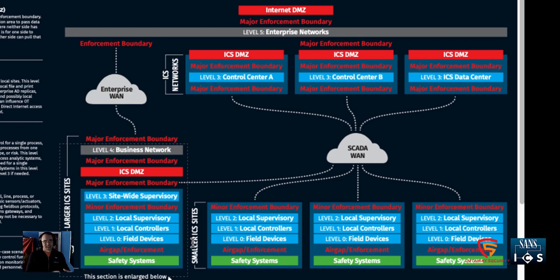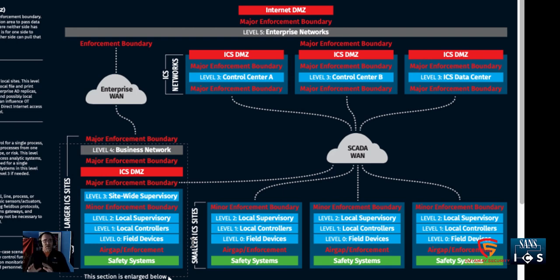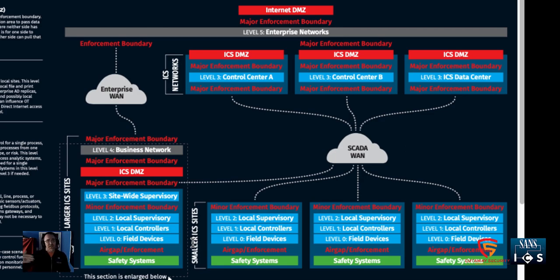Most organizations have multiple plants — distilleries, distribution warehouses — managed by a large corporate enterprise. Each local plant has a local business network tied into an enterprise network. In our reference architecture we've generated a level five for this enterprise network, which is most likely connected to the internet and the cloud. That is also a major enforcement zone between level four and level five, and definitely to the internet.